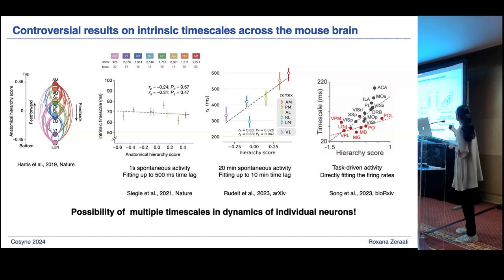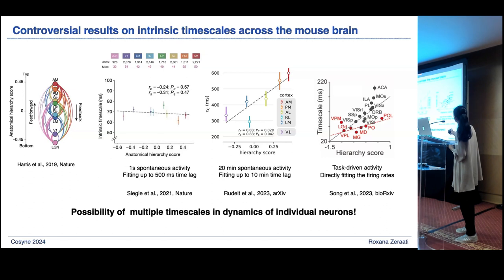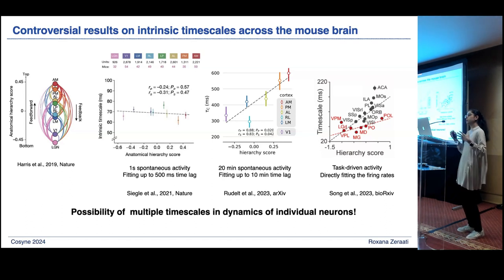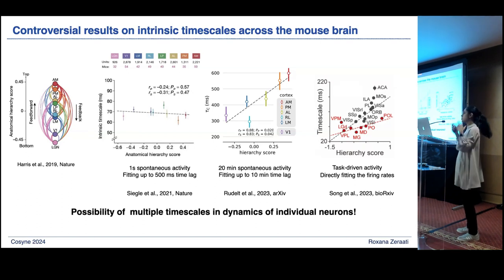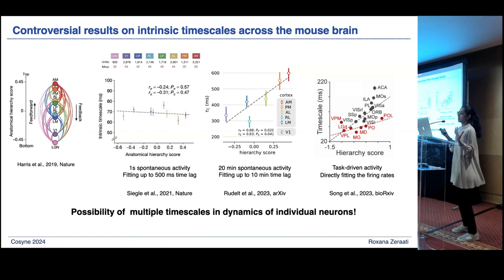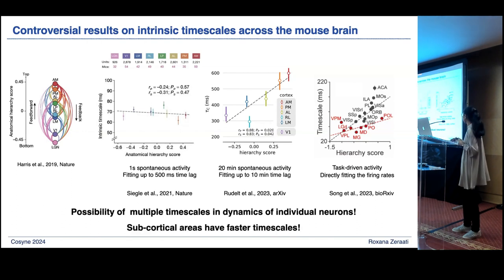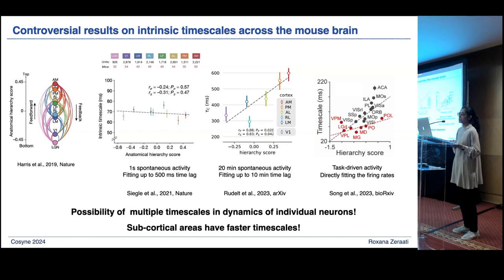One interesting finding from the last study is that they also looked at timescales in the thalamus. Most timescales in thalamic areas are much faster than cortical areas, which fits the hierarchical story. But if you zoom in within the thalamus and look at timescales versus hierarchy score, they found no relation. Their conclusion was that subcortical areas have faster timescales, but there is no hierarchical organization within the thalamus.